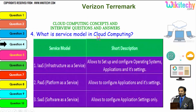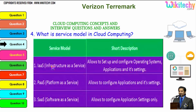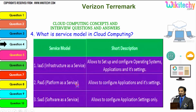The question is: what are the service models in cloud computing? There are three major service models. The first is Infrastructure as a Service, where you are allowed to set up and configure the operating system, applications, and settings — you are given a server and can install whatever you want. Platform as a Service allocates a specified operating system and you can install any application. Software as a Service gives you the software and you can configure application settings.